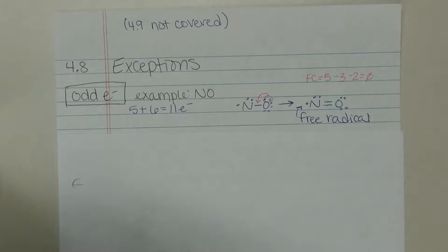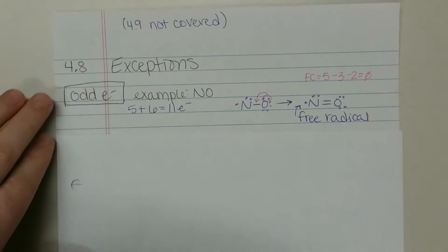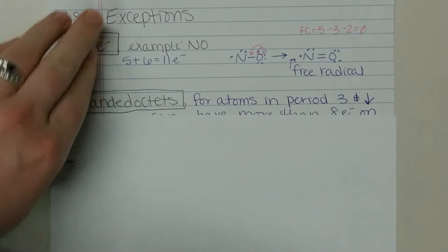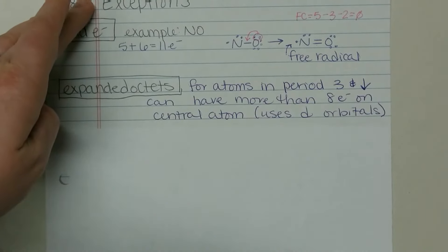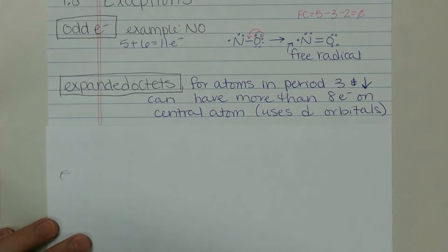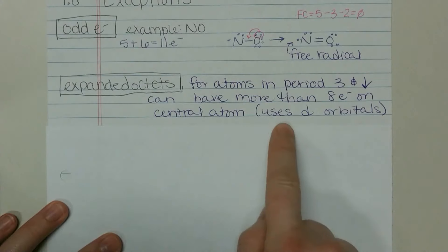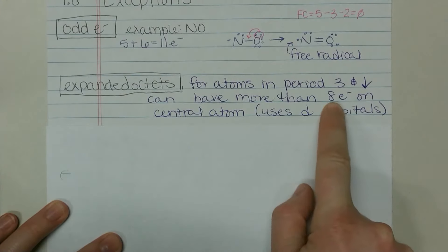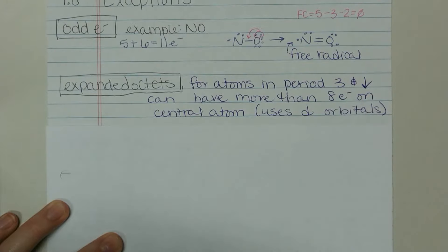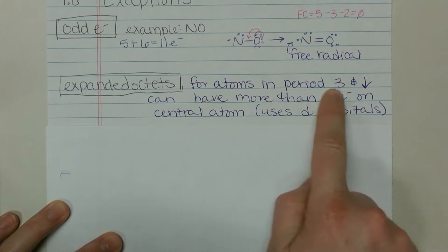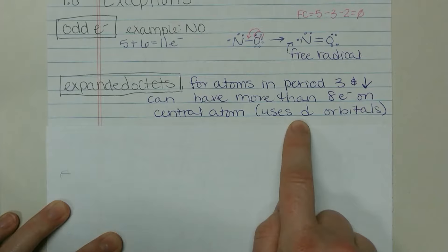Some other exceptions are we can expand the octet. So rather than just having a total of eight electrons on that central atom, we can actually use the d orbitals. Remember, the eight valence electrons comes from the s and the p, which is a total of eight electrons. Once we get into atoms that have d electrons in them, we can start to use those d orbitals because the energy is so similar that we can shift those electrons around.